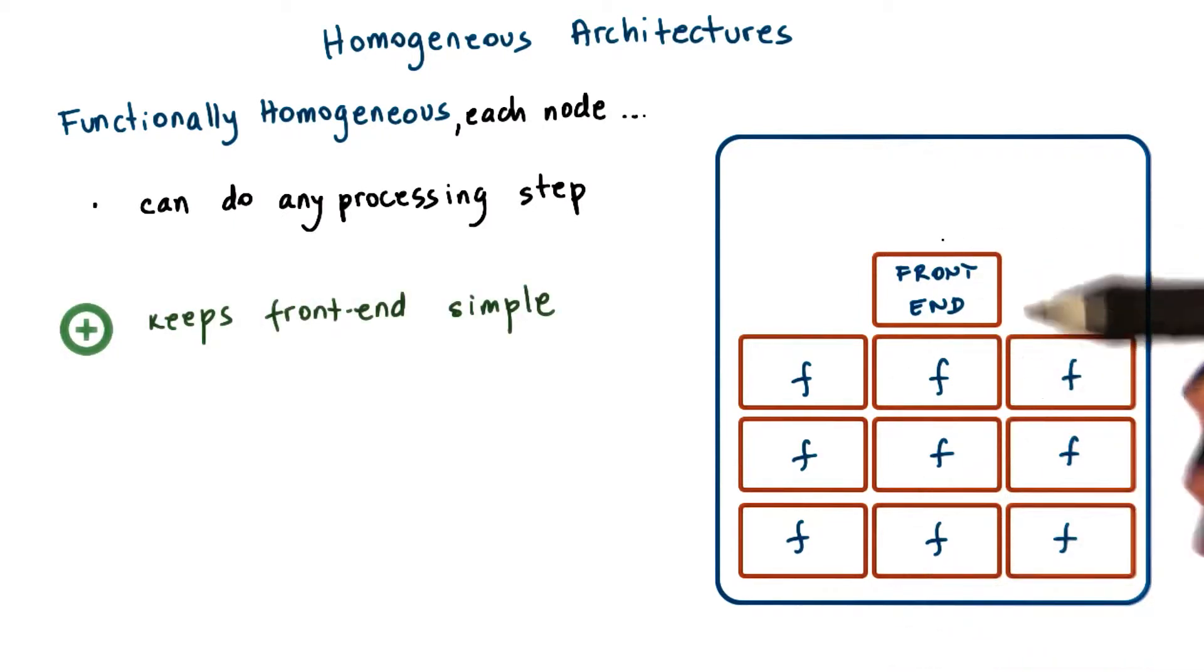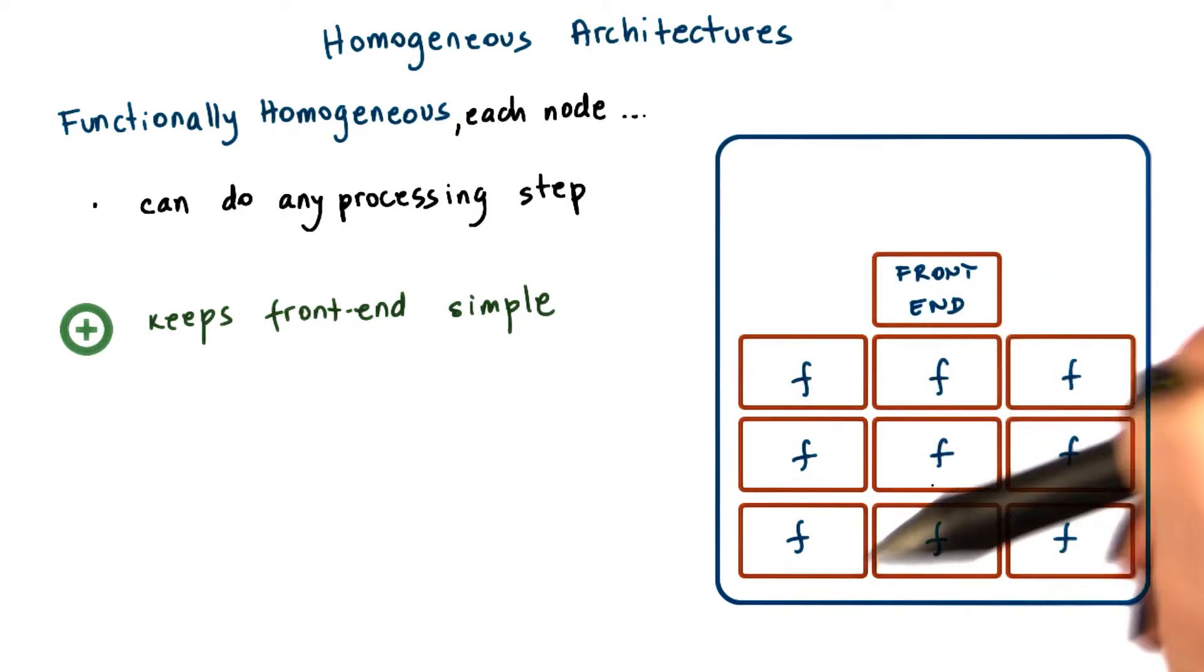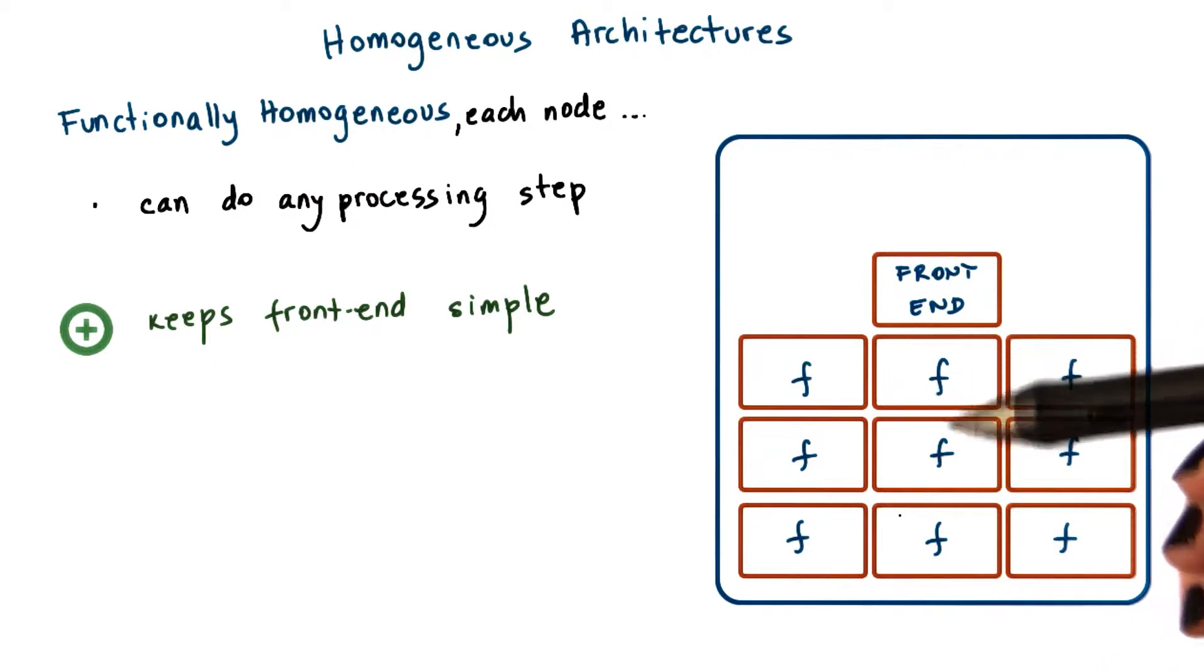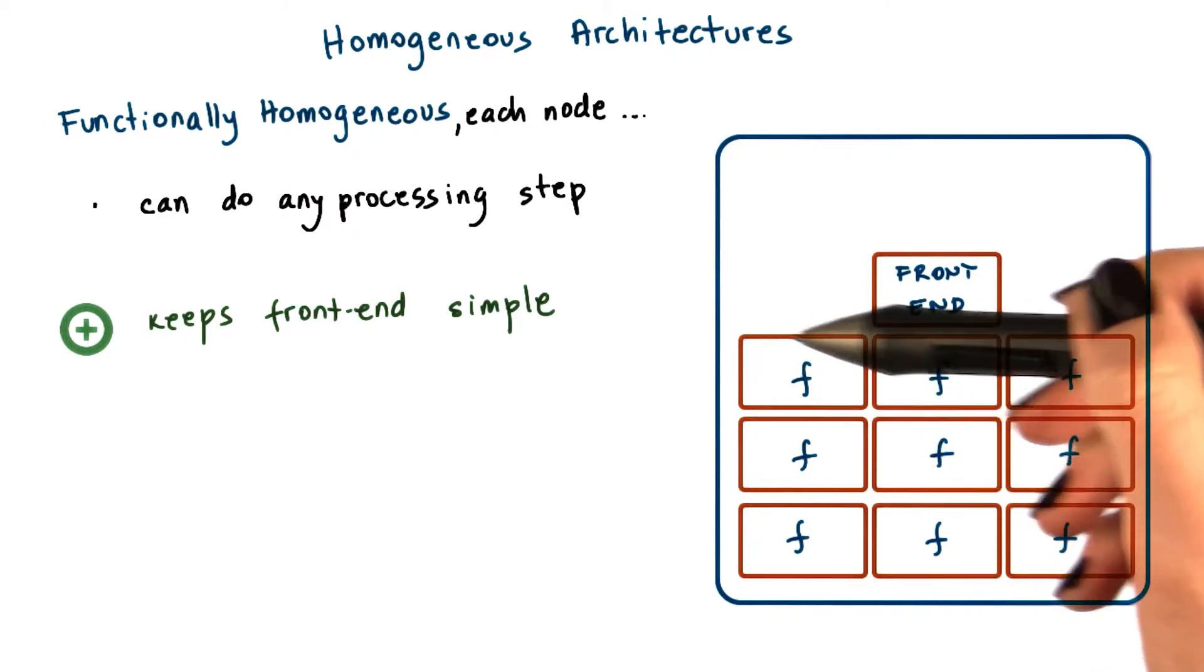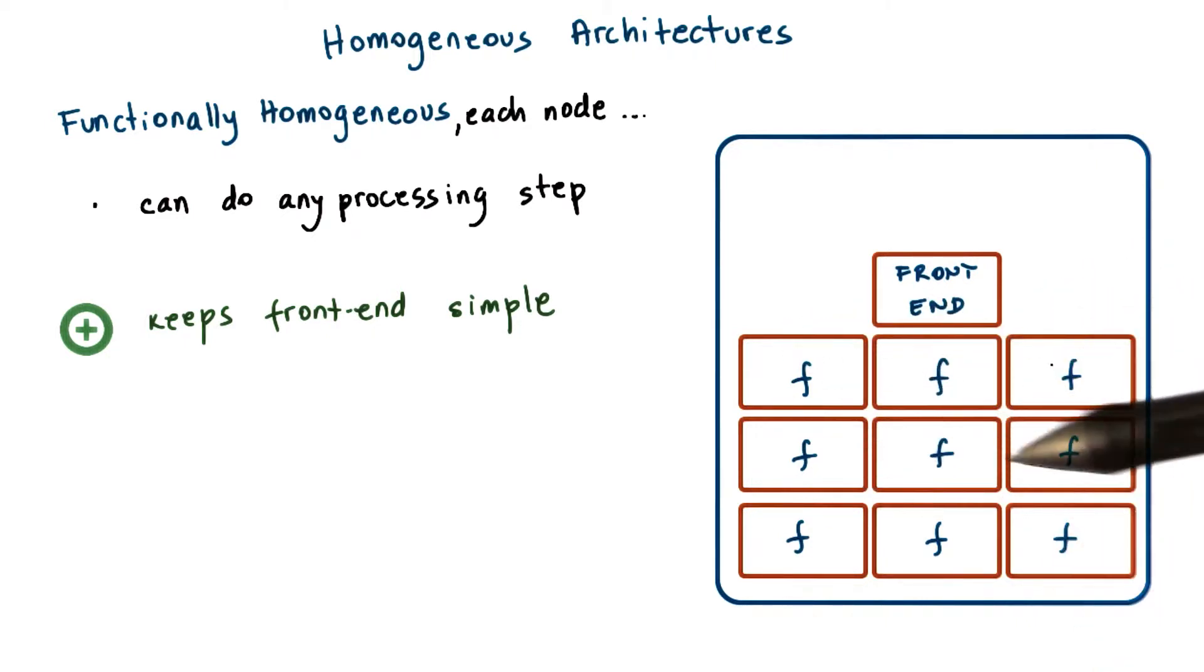The benefit of this is that the front-end can be kept fairly simple. It doesn't have to keep track which one of the nodes can perform which particular action or can service which types of requests. Instead, the front-end can simply, in a round-robin manner, send requests onto the next available node.